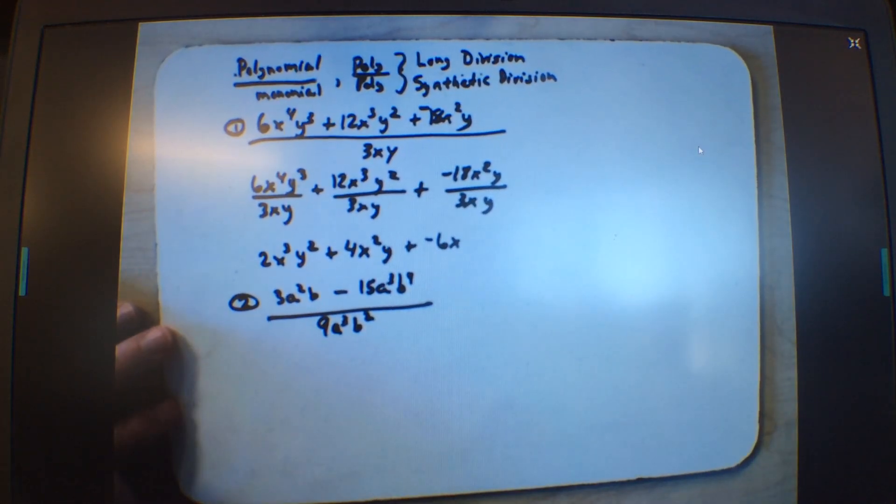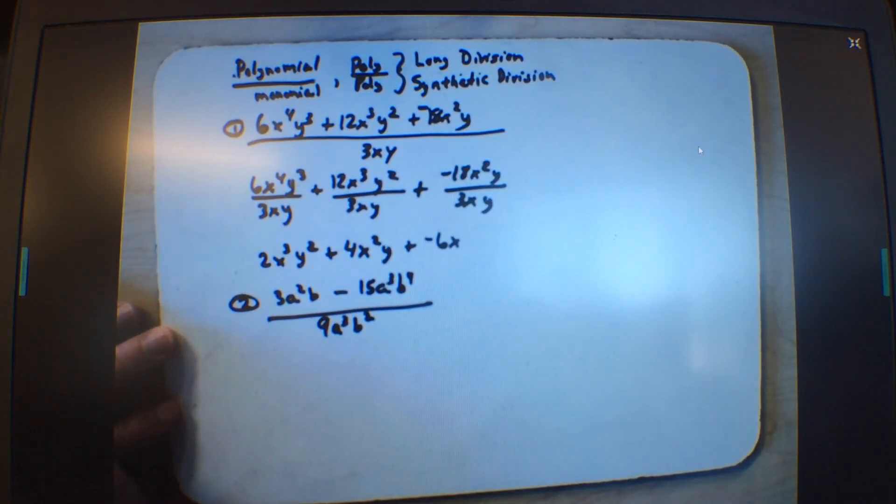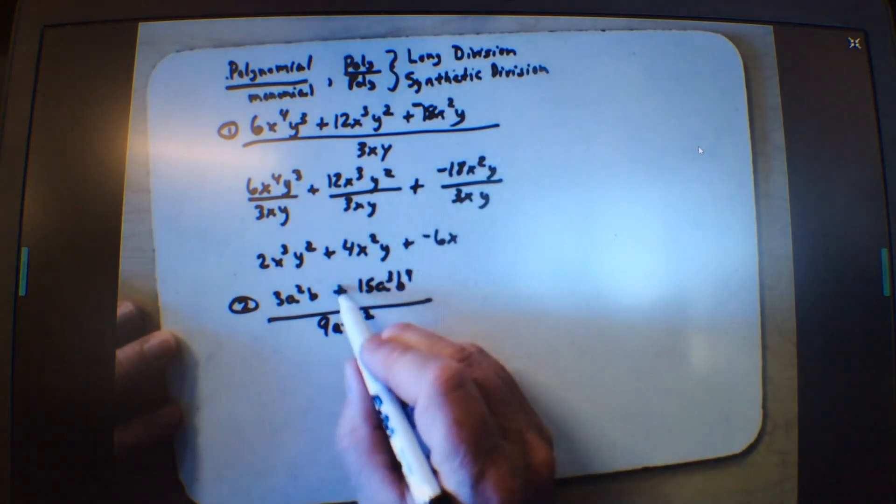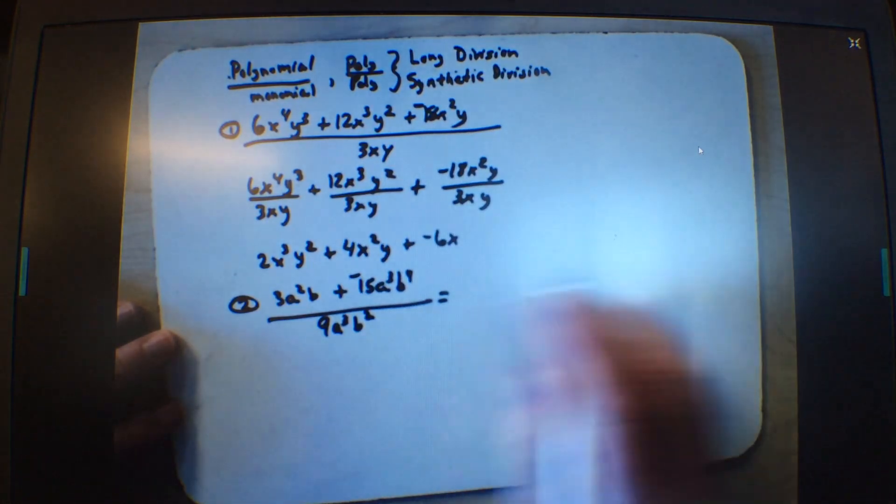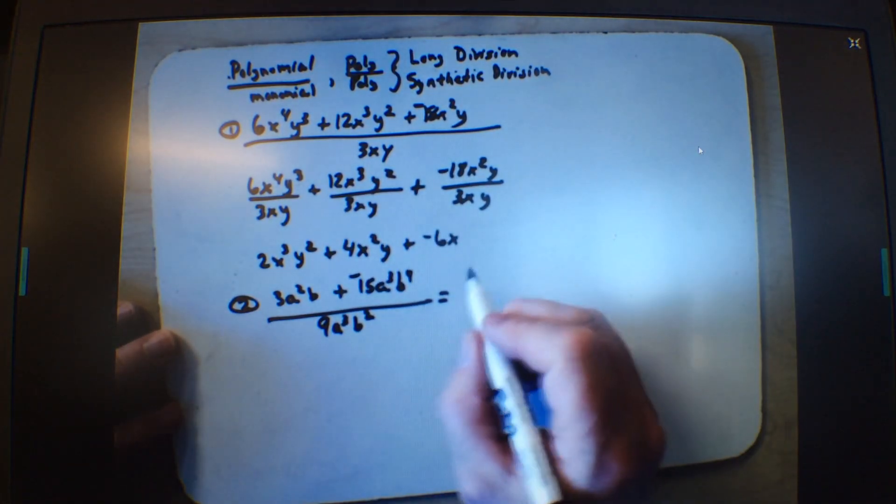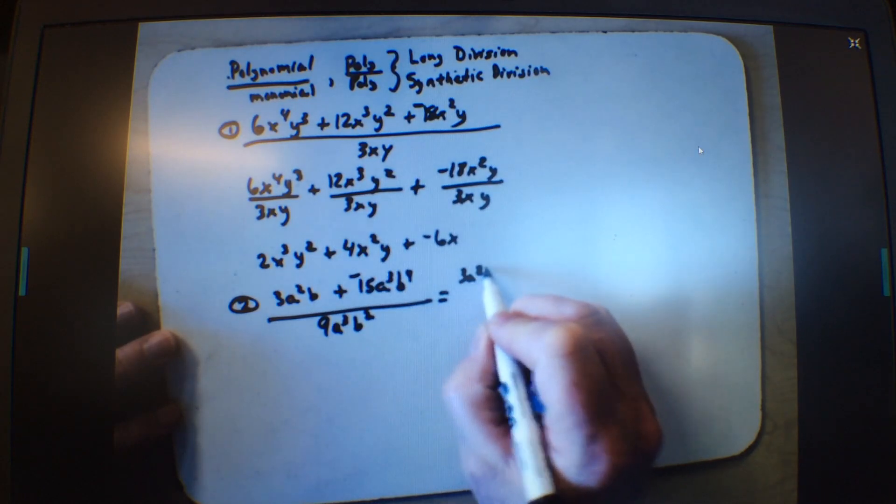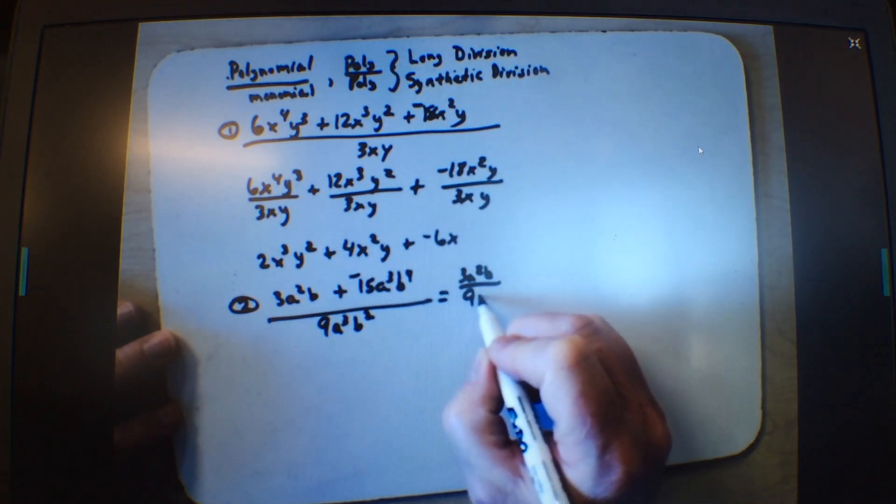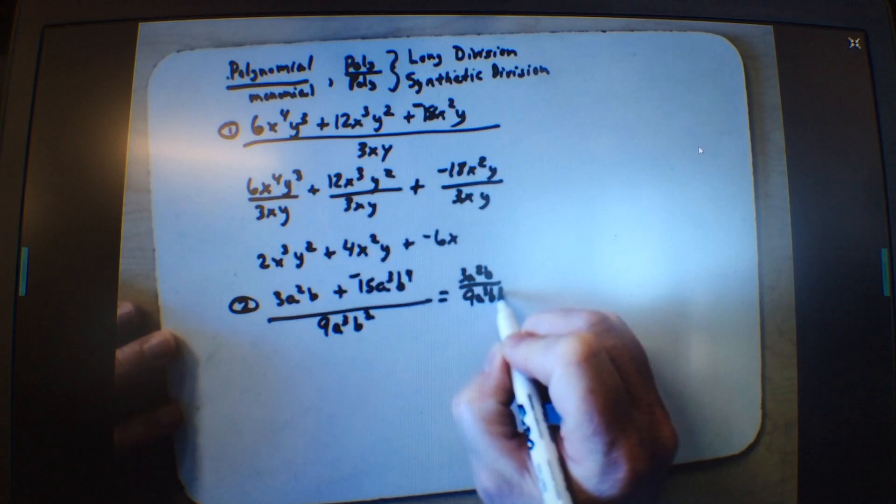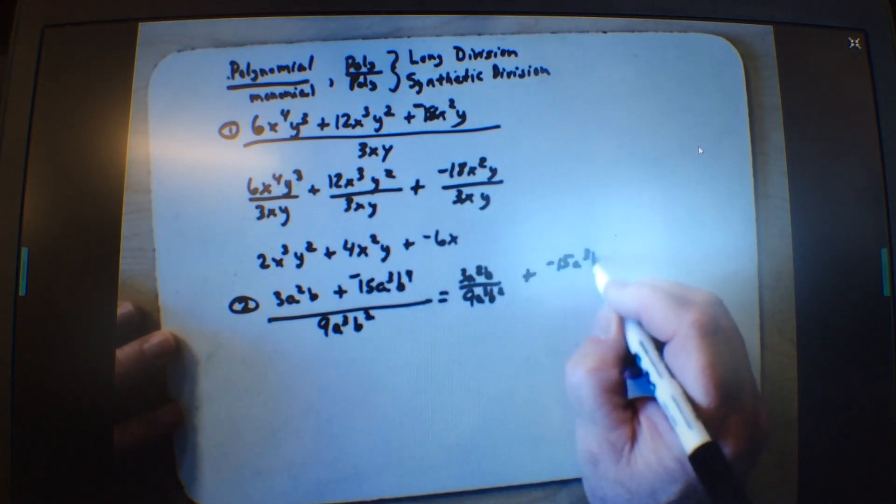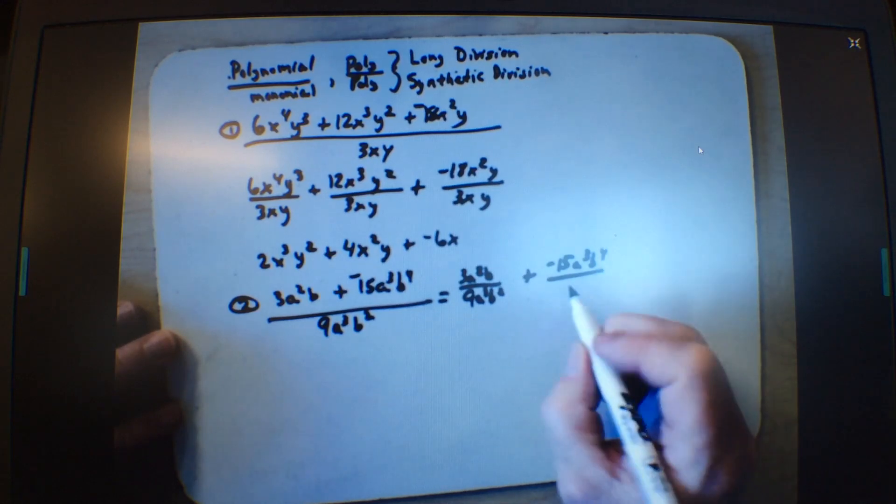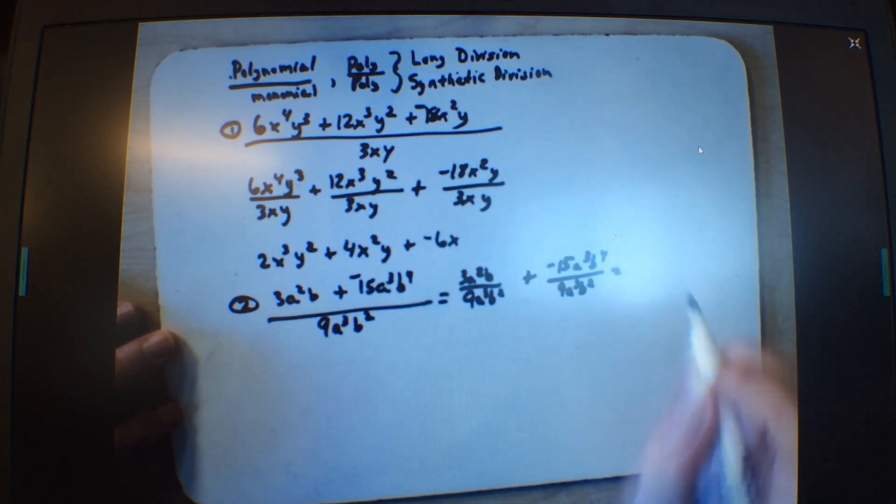Okay, the same principles apply, we do plus a negative, and I'm going to go this way, since I'm running out of space. I wish I would have gone this way up there, but I take this term over this term, and I do a negative 15a cubed b to the 4th, over the 9a cubed b squared.